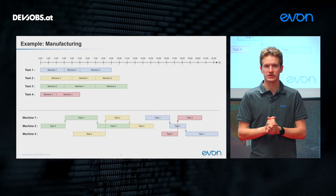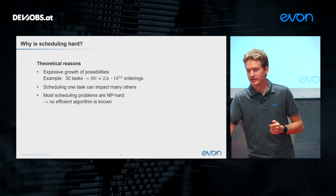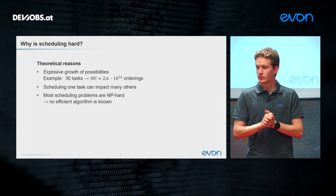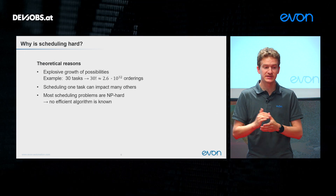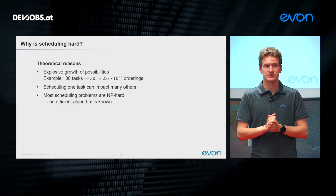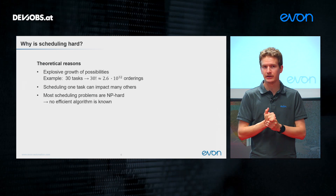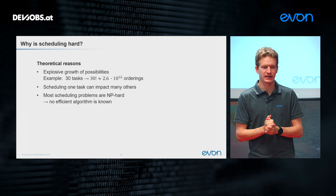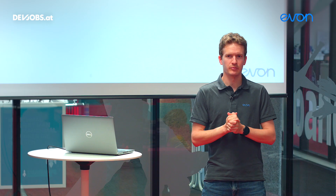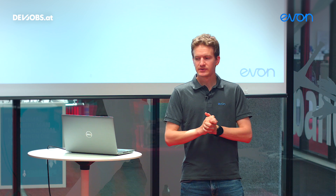That leads to the next guiding question: why is scheduling typically a hard problem? Let me start with some theoretical reasons. The first is that the number of possible schedules is typically very large. For example, with just 13 tasks, there are already 13 factorial possible orderings — a huge number with 33 digits — and even with modern computers it would take billions of years to consider all of them.